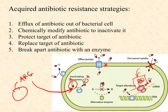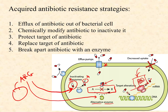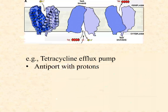The fourth strategy in this video is replacing the target, labeled here as an alternative enzyme. If the natural bacterial enzyme is the antibiotic's target, the resistance gene actually replaces that enzyme so the chemical process the antibiotic was knocking out can continue using a version of the enzyme that is not susceptible to the antibiotic. This strategy is specifically relevant to the sulfa drugs. Note that breaking apart the antibiotic using an enzyme will be covered in its own dedicated video.